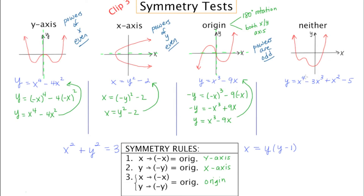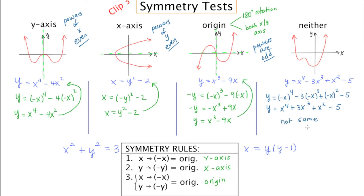The problem arises when you have a combination of even and odd powers in the same expression — powers of 2 and 4 (even) alongside a power that's odd. This is usually what creates no symmetry at all. If I replace all the x's with negative x, I end up with y equals x to the fourth plus 3x cubed plus x squared minus 5. This is close to the original but not exactly the same, so it's not y-axis symmetry. Replacing y with negative y won't help either, and replacing both x and y with their negatives still won't match, so this graph has no symmetry whatsoever.